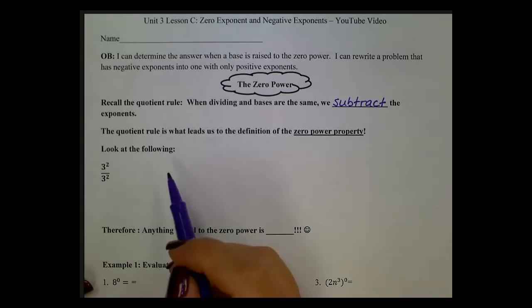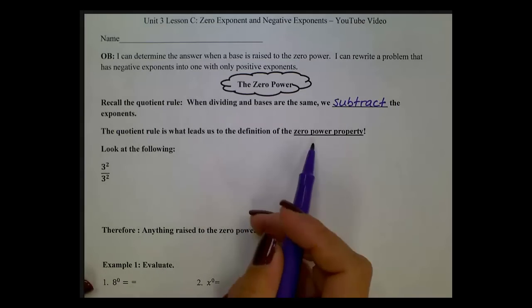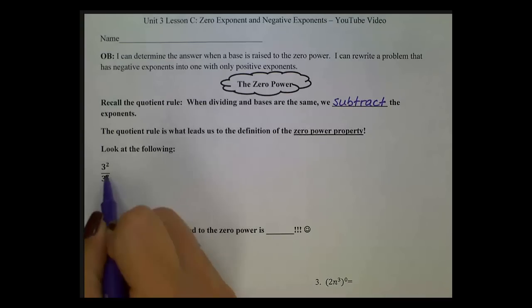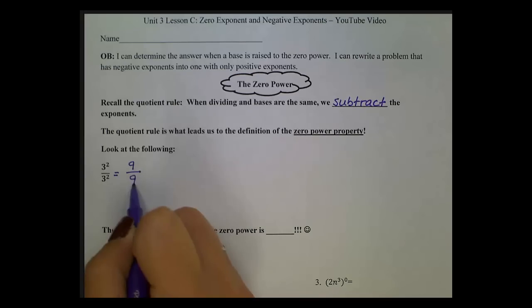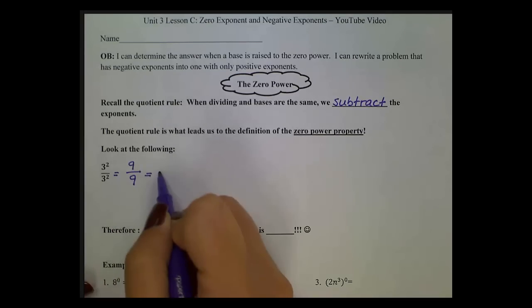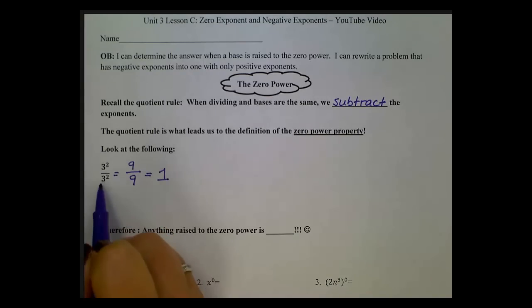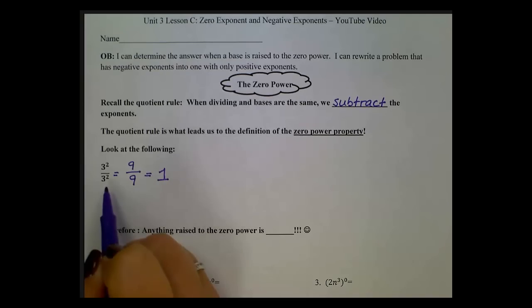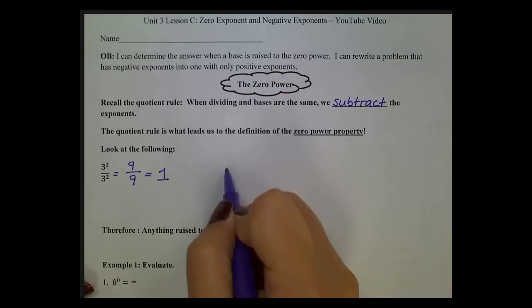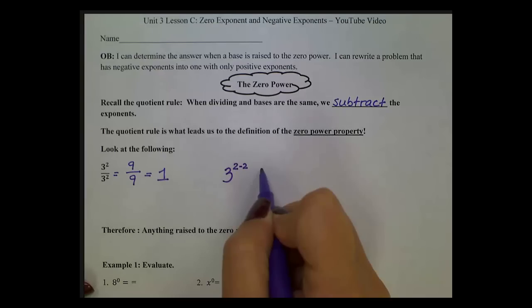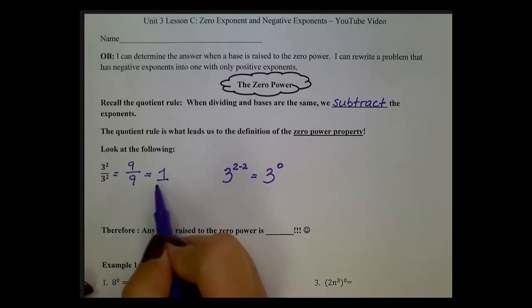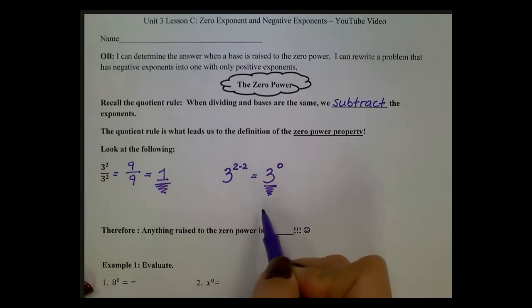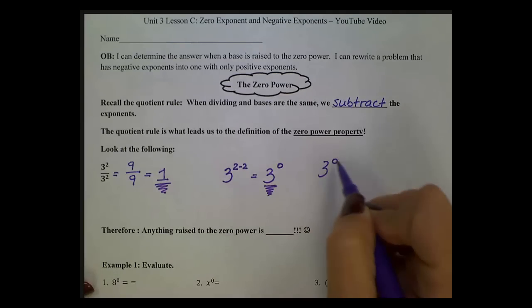The quotient rule is what leads us to the definition of the zero power property. If we look at 3 squared over 3 squared — if we evaluate this, 3 squared is 9, and 9 divided by 9, or anything divided by itself, is 1. So 3 squared divided by 3 squared is 1. Now using the quotient rule, we subtract the exponents: 3 to the 2 minus 2 power, which is 3 to the 0 power. So 3 to the 0 power is 1.